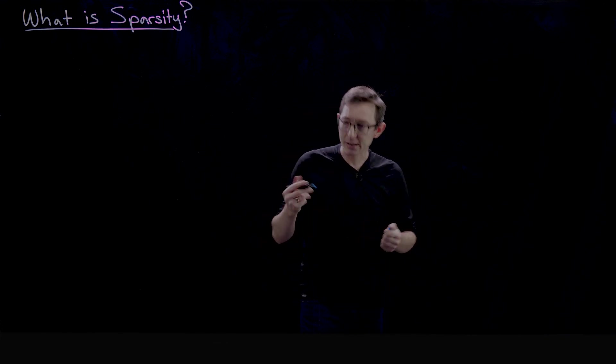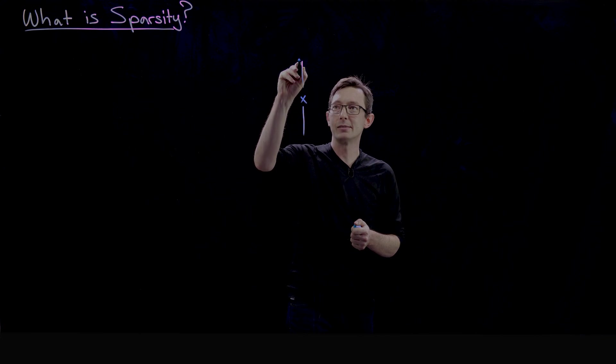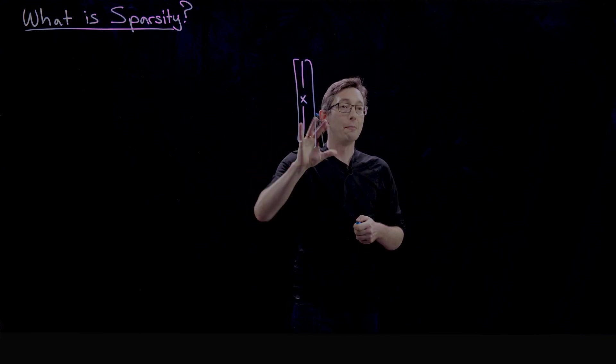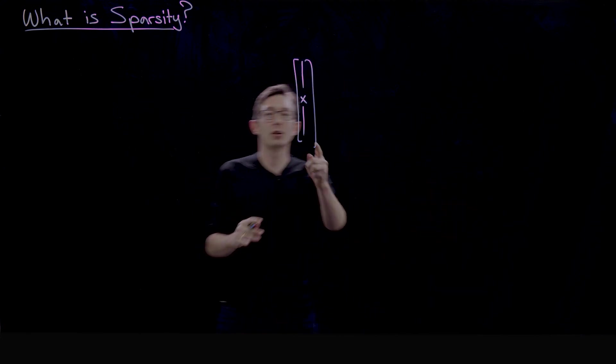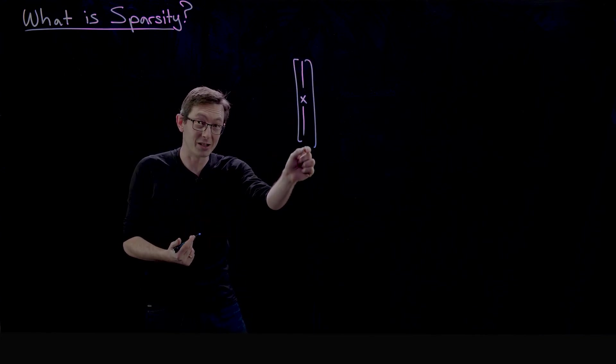The big idea here with sparsity is that you have some vector of data X—this is probably a really high dimensional measurement of some system you care about. This could be the million pixels of your image rearranged into a million by one tall skinny vector.